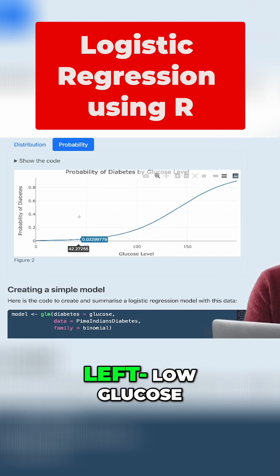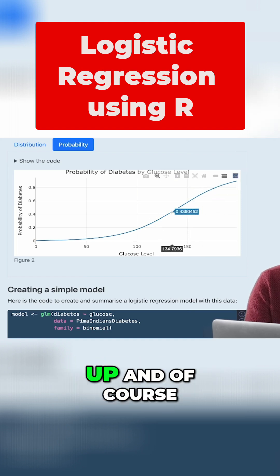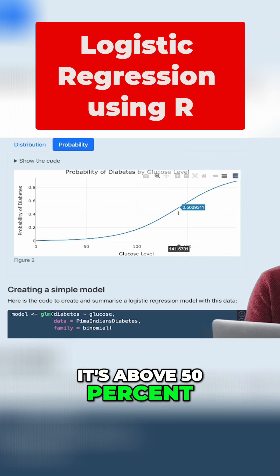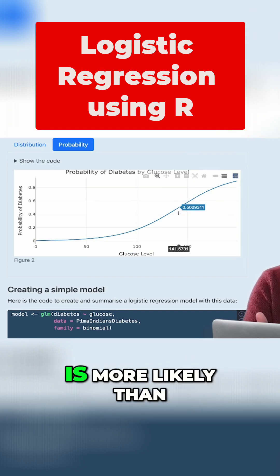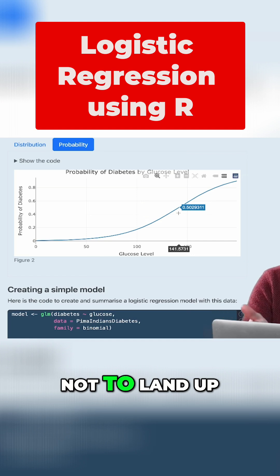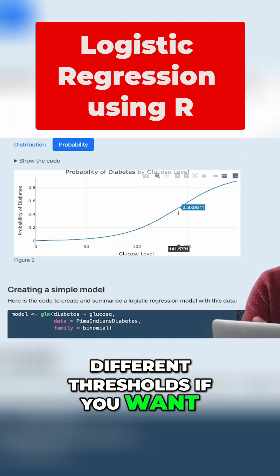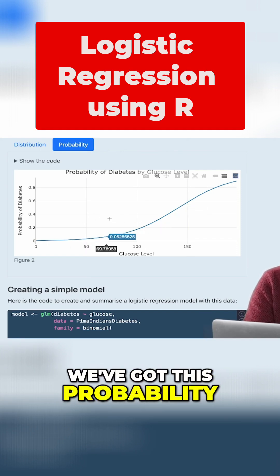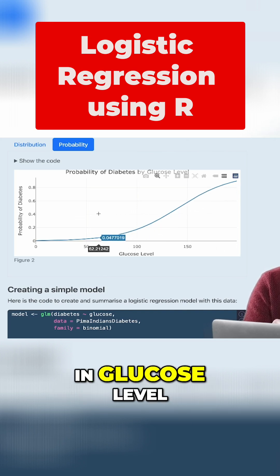As I move from left — low glucose — to high glucose, you can see the probability goes up. And of course you could have a threshold; you could say if it's above 50 percent — so any glucose above 141 — we would predict is more likely than not to land up with a diagnosis of diabetes. But you could have different thresholds if you want, or you could look at the exact probability for a specific level of glucose. The point is we've got this probability associated with a change in glucose level.